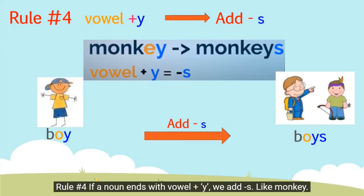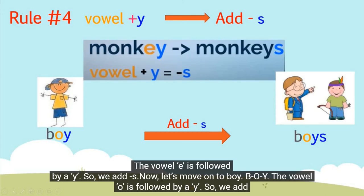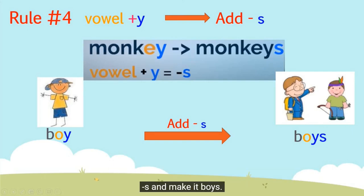Rule number four: when a noun ends with vowel plus Y, we add S. Like monkey — the vowel E is followed by a Y, so we add S and make it monkeys. Now let's move on to boy — O-Y, the O is followed by a Y, so we add S and make it boys.